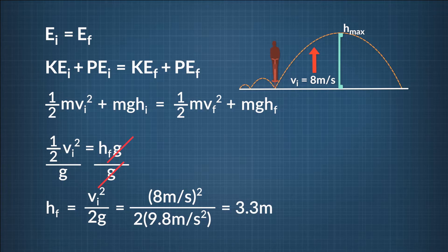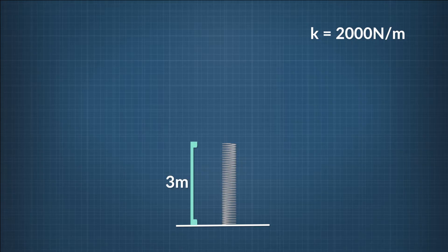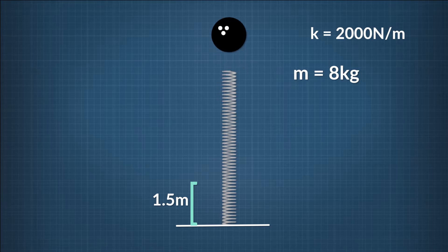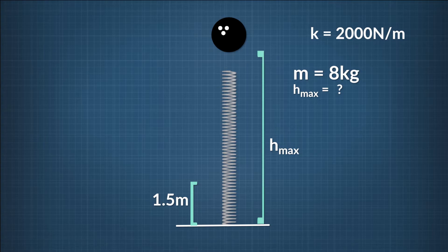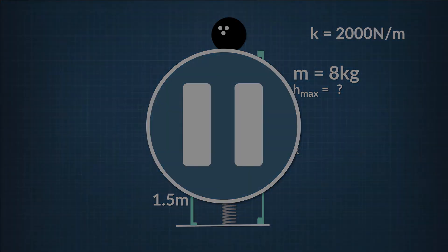With this height, you will be able to win the competition. Let's work one more example, this time including spring energy into the scenario. A large, powerful spring is set up vertically with one end fixed to the ground. The spring's constant is 2,000 newtons per meter, and at equilibrium it is 3 meters long. You set an 8 kilogram bowling ball on the spring and compress it 1.5 meters. Then the spring is released and the bowling ball launches straight up in the air. What is the maximum height the ball reaches? Go ahead, press pause, give it a try, and when you think you have the answer, come back and check your work.